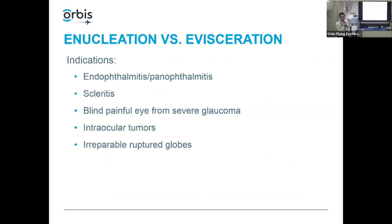First, let's think about the indications, because depending on why the patient is having their eye taken out, it can determine which one you should or should not be doing. Endophthalmitis and panophthalmitis is the infected eye that has to come out so it doesn't spread into the orbit - typically they've failed intravitreal antibiotics. Scleritis could be autoimmune with intractable pain, or fungal or bacterial. A blind, painful eye, typically from neovascular glaucoma. Intraocular tumors like retinoblastoma and choroidal melanoma, and irreparably ruptured globes - though give them a few days to process it mentally.